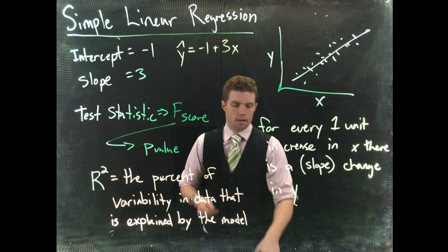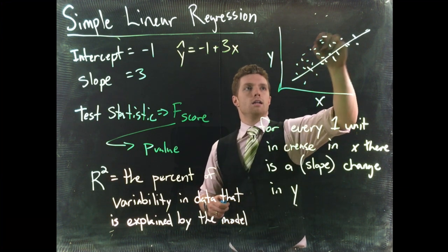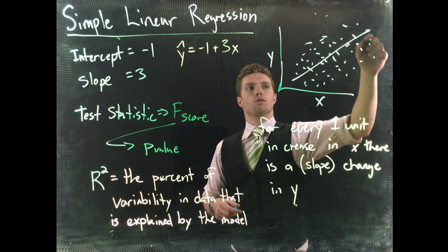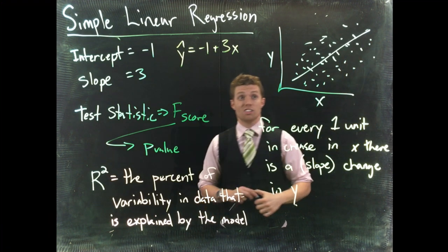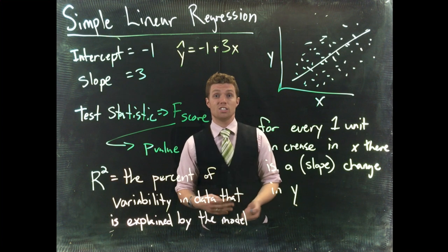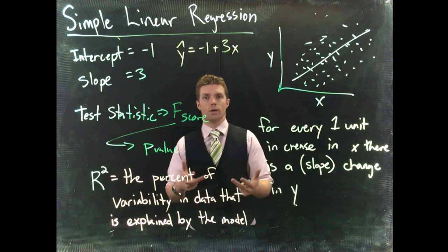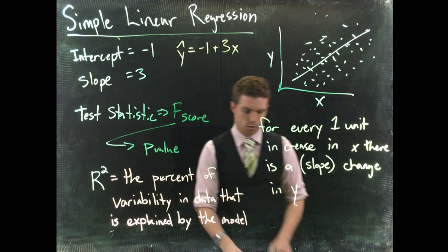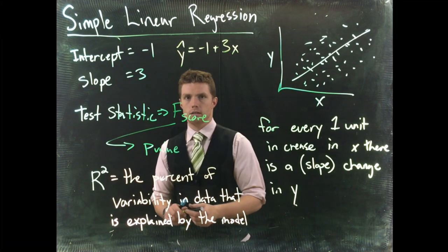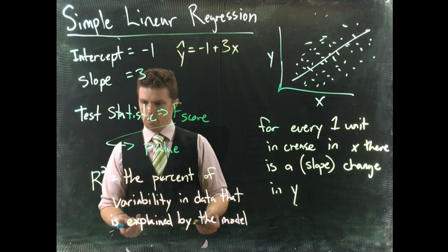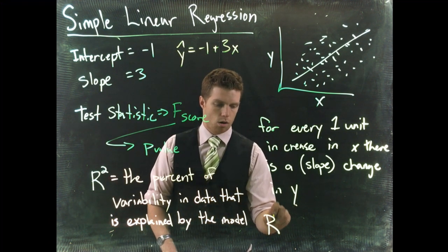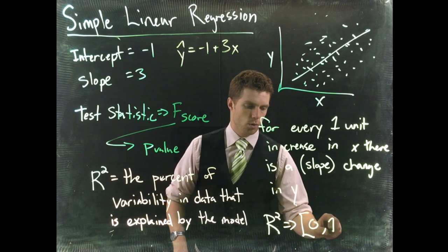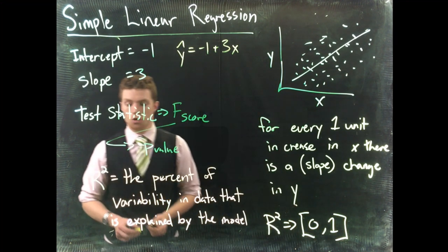If we have another data set that looked like this with the data points being much more further spread out, there's still a general relationship, but there's a lot more noise in the system. There's a lot more variability, and so the r squared would be less. So your r squared is going to be between 0 and 1, and the closer to 1 that we get, the better.